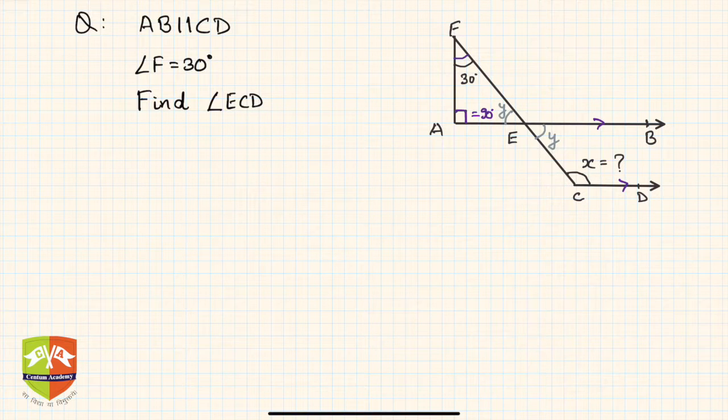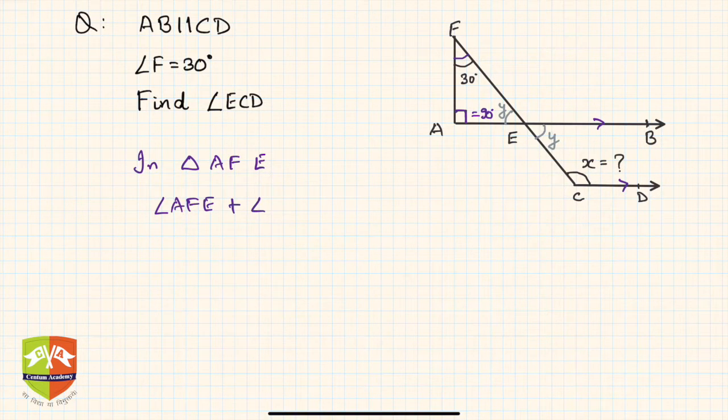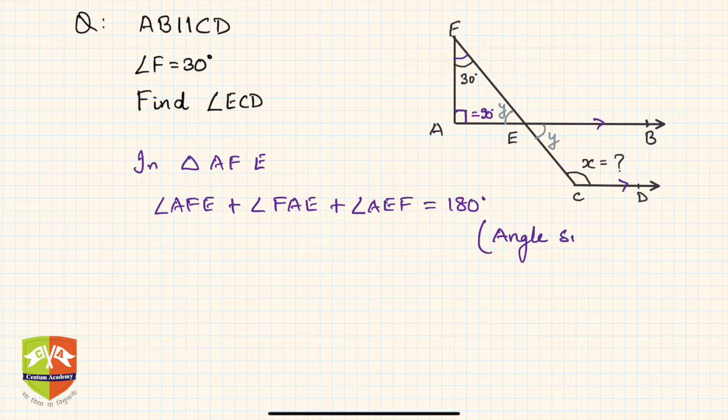In triangle AFE, angle AFE plus angle FAE plus angle AEF equals 180 degrees. The reason is the angle sum property of a triangle, which says that the sum of three angles of a triangle is 180 degrees.